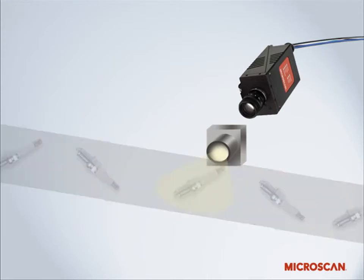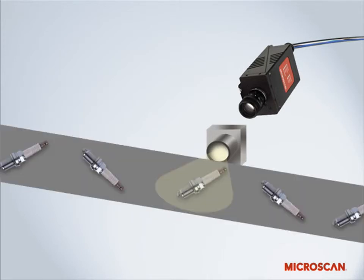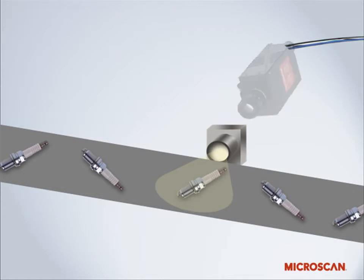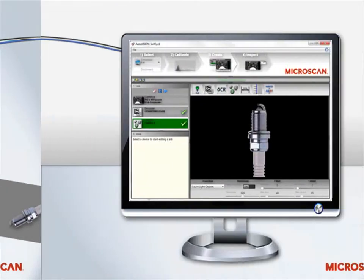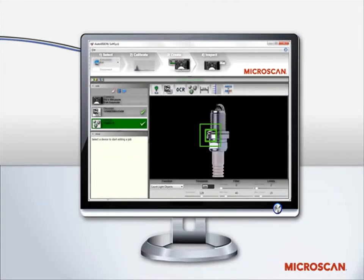First, you have a manufacturing production line with a steady flow of objects. Then, you have a camera or optical system trained on the line. Next, you make sure that you have proper lighting of the line so the camera can see the necessary details. The camera captures digital photographs and analyzes the images against a defined set of criteria.